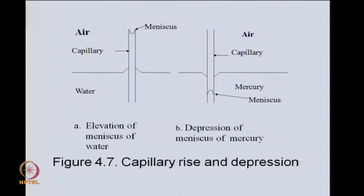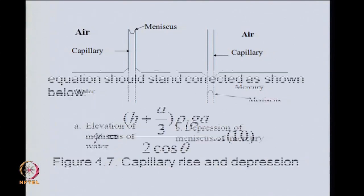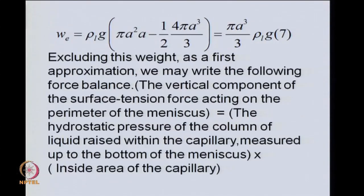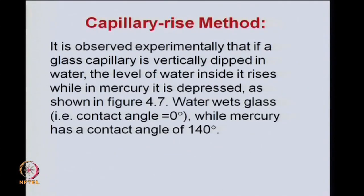At an air-water interface, a fine capillary would see the level of water rising, but for mercury the level drops. Roughly, the meniscus is concave upwards for water and convex upwards for mercury. The shape of the meniscus has something to do with the contact angle. For glass dipped in water, the contact angle is 0 and the surface tension force tends to pull the water upwards.